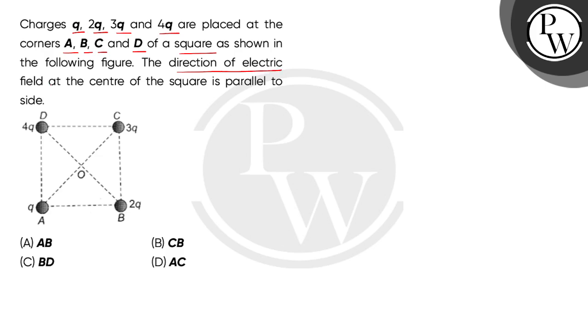The direction of electric field at the center of the square is parallel to the side. So children, we have given this diagram, a square which is named by the vertices A, B, C and D.